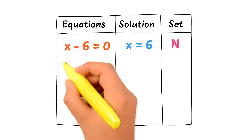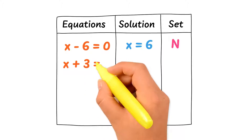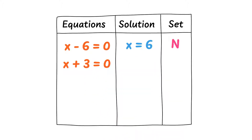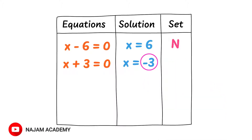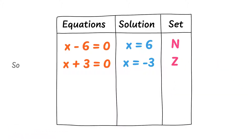Secondly, consider x plus 3 is equal to 0. We know that its solution is x is equal to minus 3. Minus 3 is a negative integer and belongs to the set of integers, or Z. So the solution of this equation lies in the set of integers or real numbers.